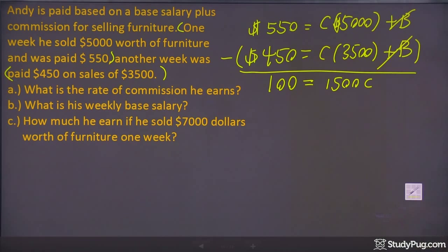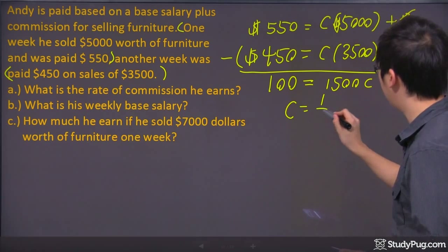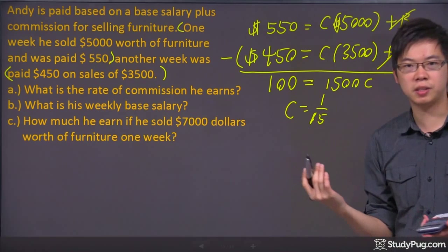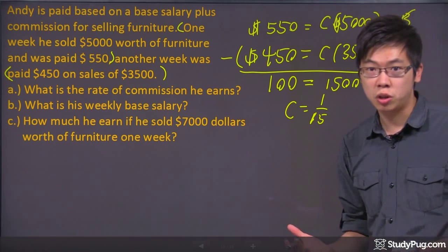And the math I'm going to solve right here will be just 100 divided by 1500, and we got ourselves 1 over 15. So the C is just 1 over 15.